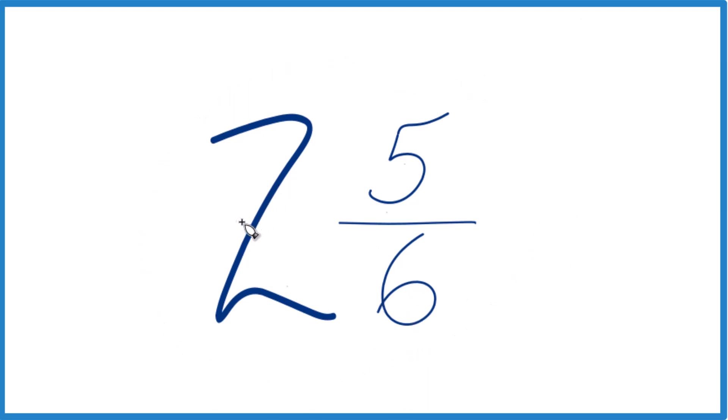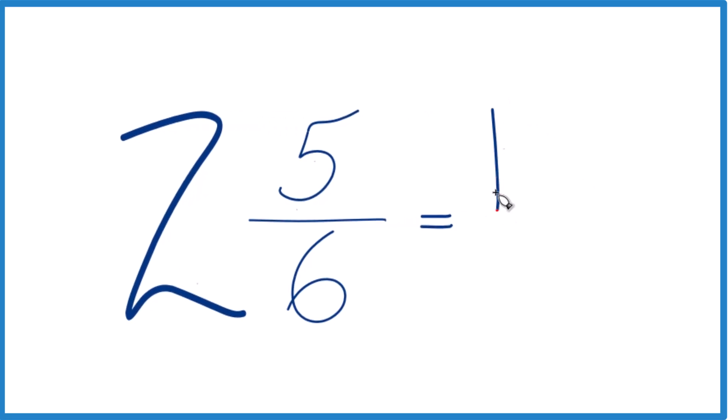Take the whole number 2, multiply that by 6. 2 times 6, that's 12, and then 12 plus 5, that equals 17.